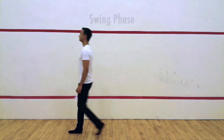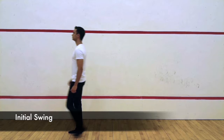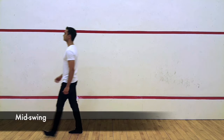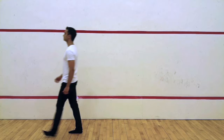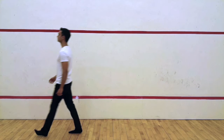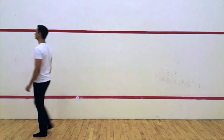Following toe off, the swing phase of gait begins. During this phase, the reference foot swings forward and is no longer in contact with the ground. This phase makes up approximately 40% of the normal gait sequence. Initial swing is the first component of the swing phase; it begins after toe off and ends when the reference foot is positioned beneath the body. This motion is facilitated by contraction of the flexor muscles of the hip. Mid swing occurs as the foot swings forward from beneath the body, with the knee in a flexed position. During terminal swing, the knee is extended and the reference foot prepares for the next heel strike. Once the reference foot makes the next heel strike, the gait cycle is completed.